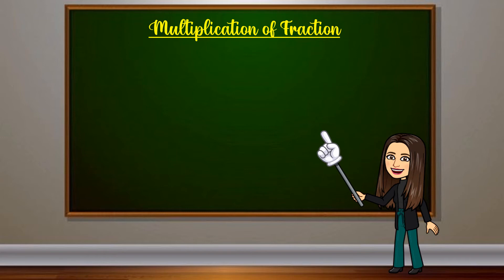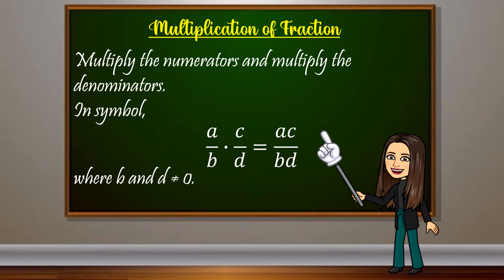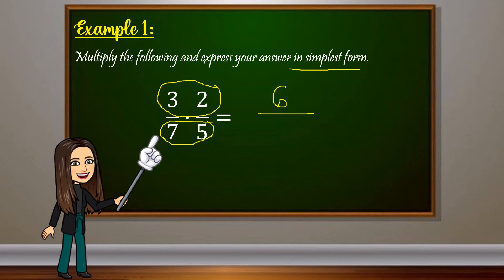Next, we have the multiplication of fractions. In multiplying fractions, simply multiply the numerators and multiply the denominators, where the denominator should never be equal to 0. For example number 1, multiply 3 over 7 by 2 over 5. Multiply the numerators: 3 times 2 equals 6. Multiply the denominators: 7 times 5 equals 35. Since 6 and 35 have no common factor, the final answer is 6 over 35.